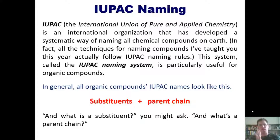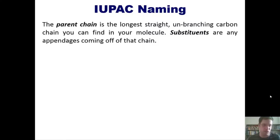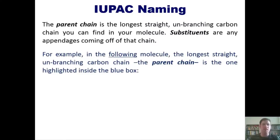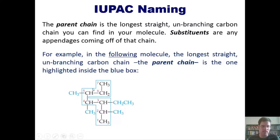At a general chemistry level I'll keep it simple, though it goes deeper at the organic chemistry level. The parent chain is the longest straight, unbranching carbon chain that you can find in your molecule. Substituents are any appendages that are dangling off of that chain.